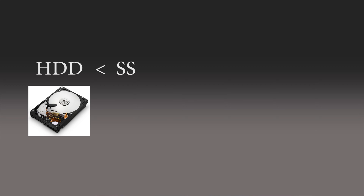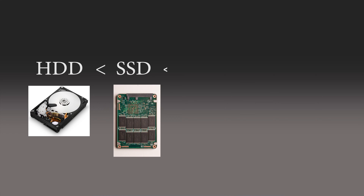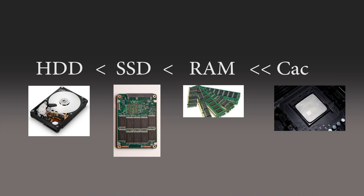Once we try to open an application, it is stored in the CPU cache. And then when we try to open it again, it is directly taken from the cache memory. Here's a basic principle: HDD is the slowest part, then come SSDs — solid state drives — then we have RAM, and then we have a much faster memory called cache memory, which is a part of the processor.